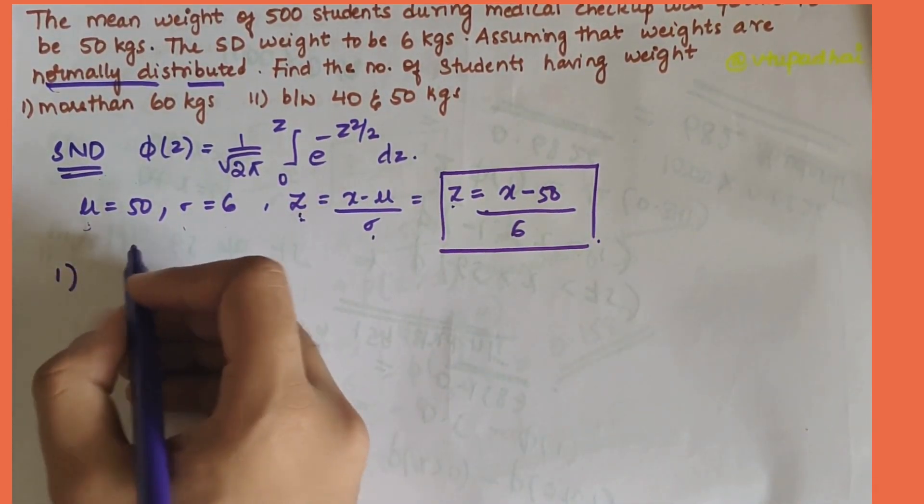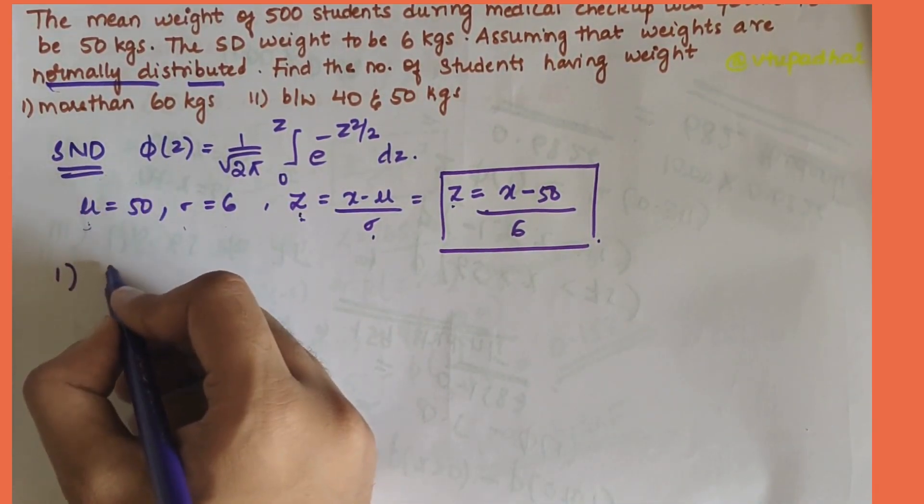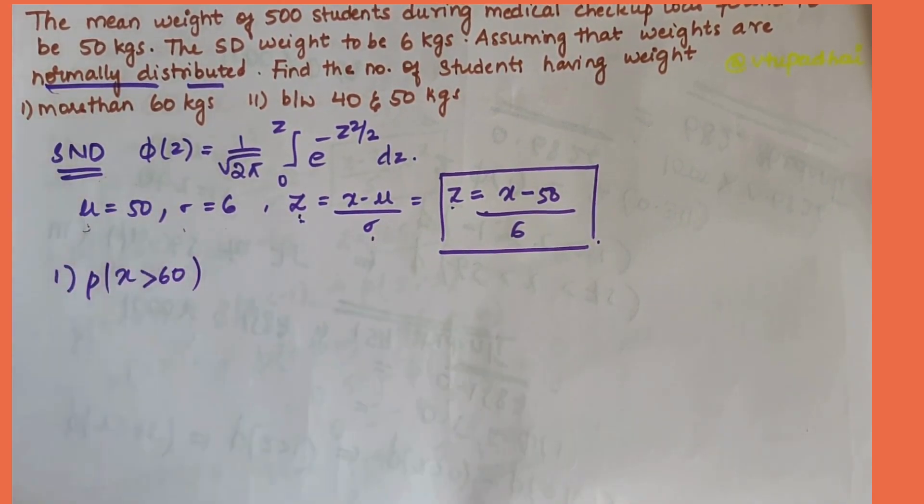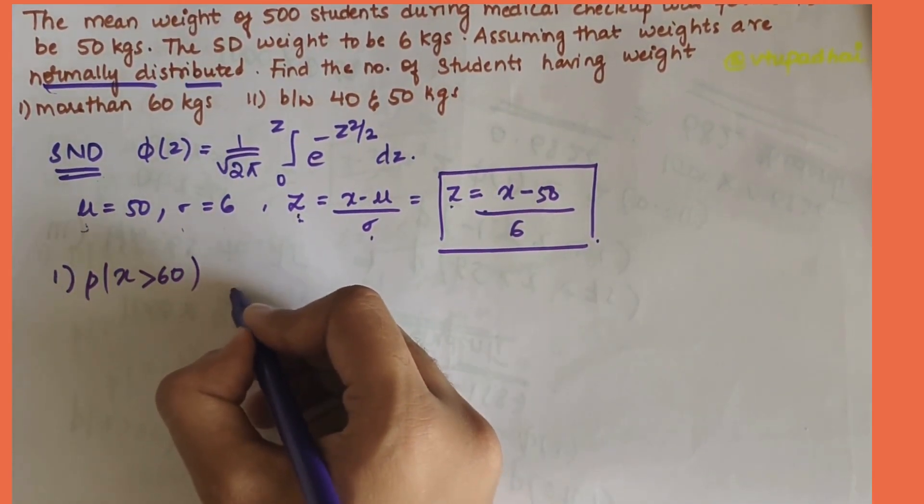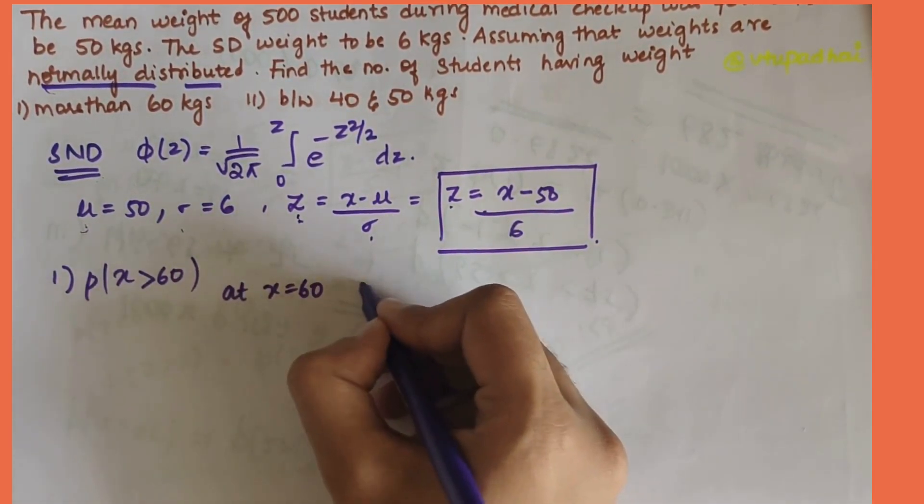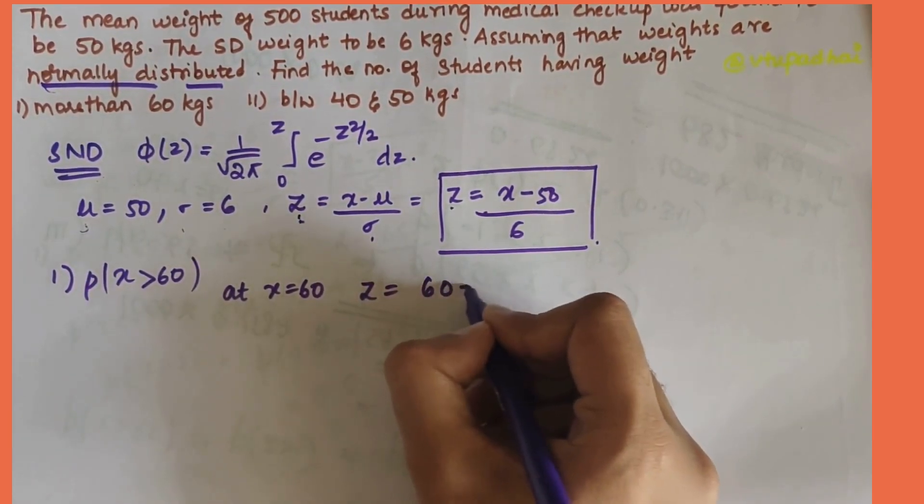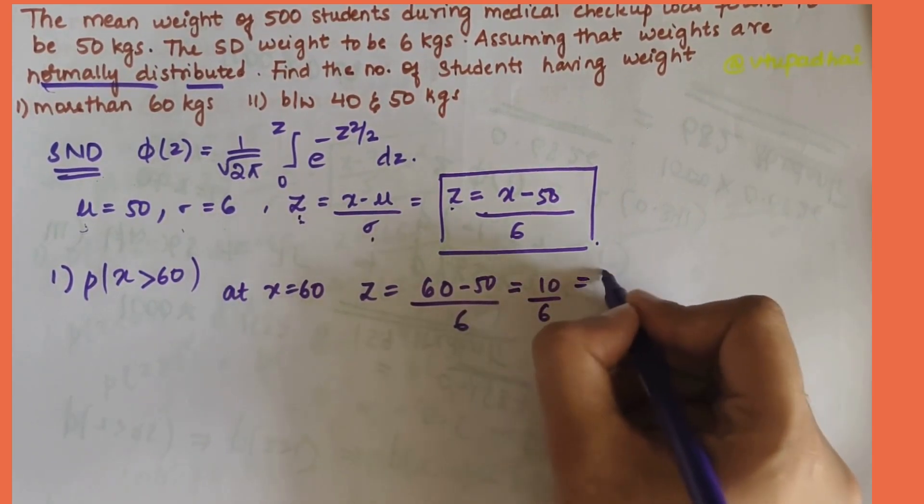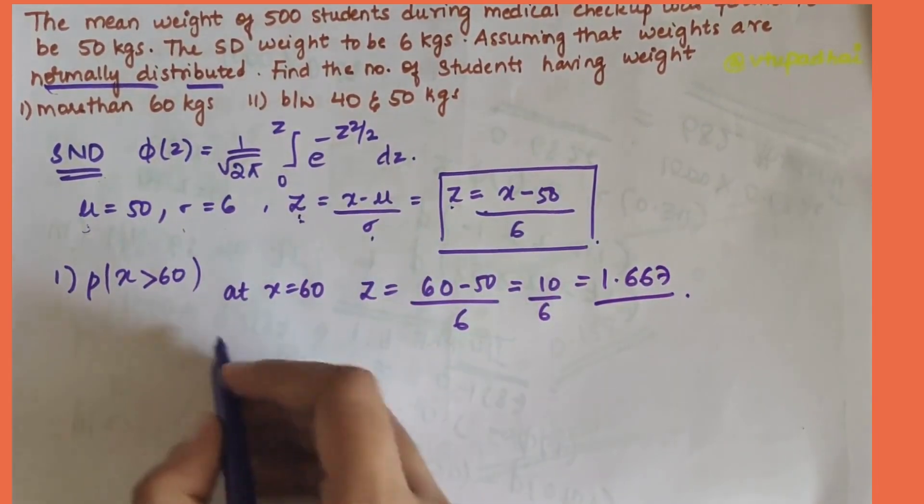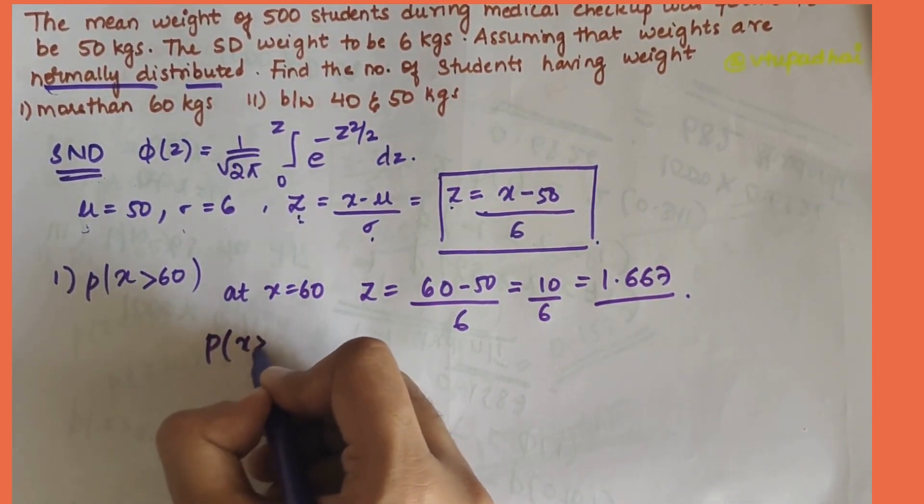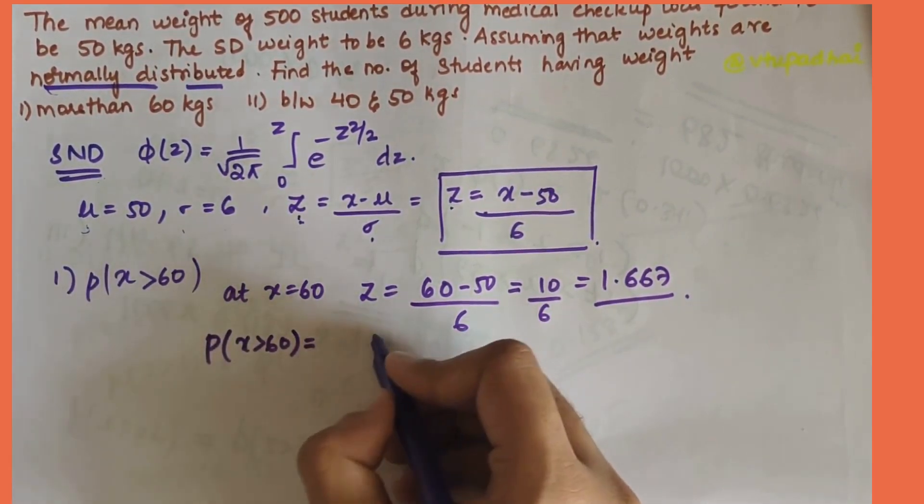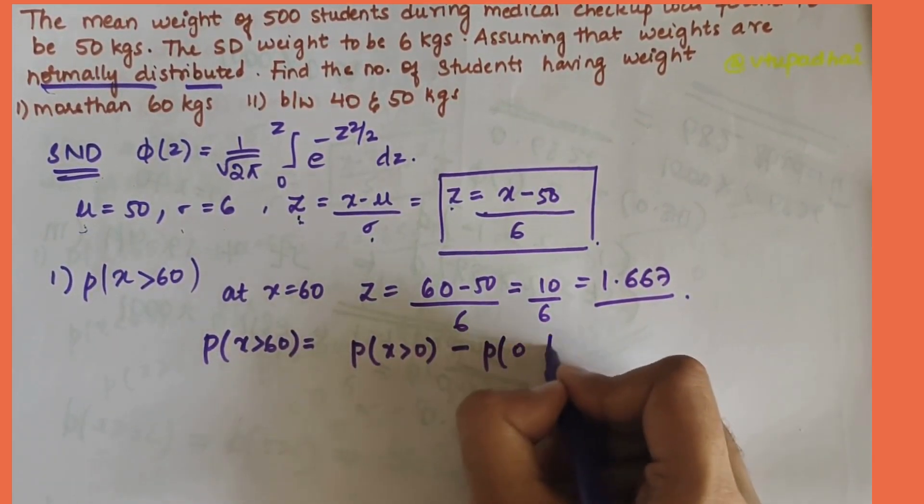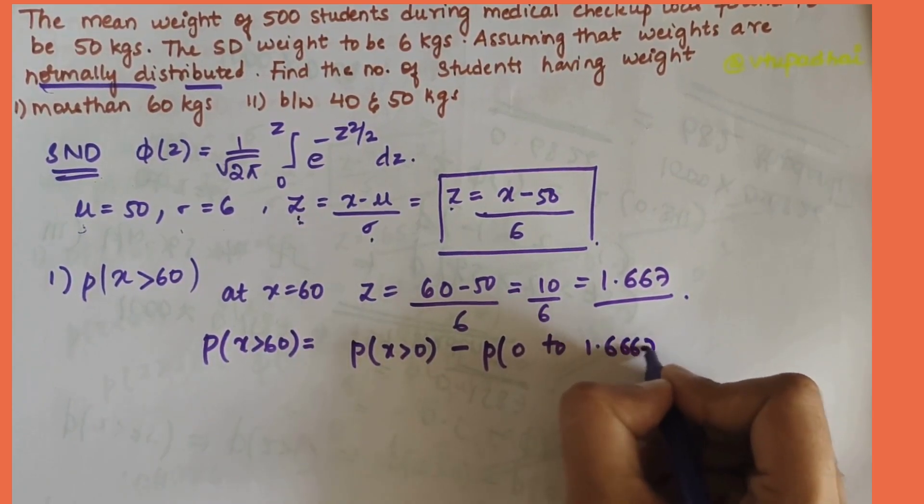Our first question says more than 60 kgs, so we have to find P(x greater than 60). Here let's take at x is equal to 60, the z value would become 60 minus 50 by 6, that is 10 by 6, that is 1.667. P(x greater than 60) can be written as P(x greater than 0) minus P(0 to 1.6667).